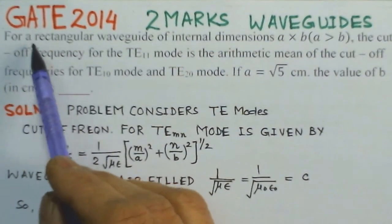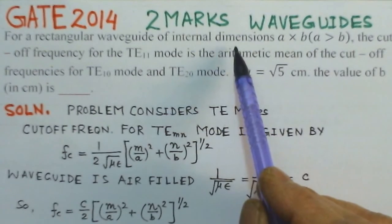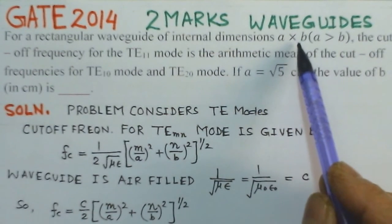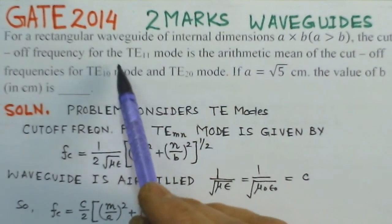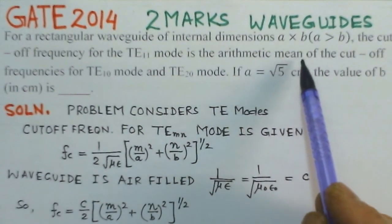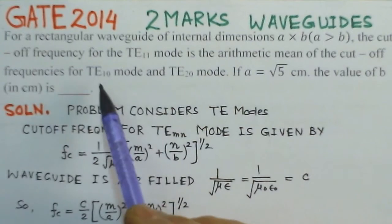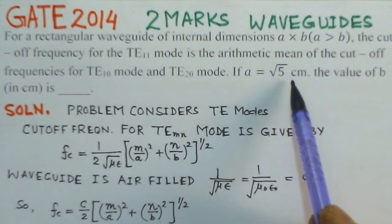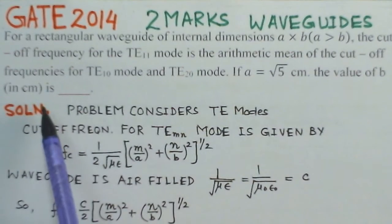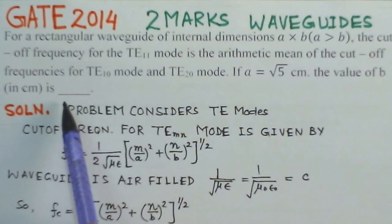Read out the problem here. For a rectangular waveguide of internal dimensions A into B, where A is greater than B, the cutoff frequency for TE11 mode is the arithmetic mean of the cutoff frequencies of TE10 mode and TE20 mode. If A is root 5 cm, the value of B in cm is given by.